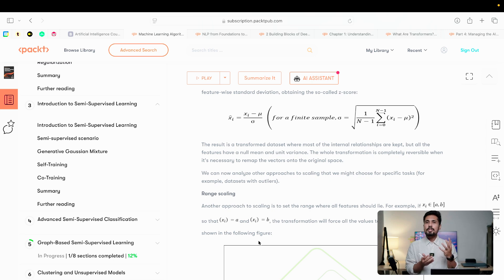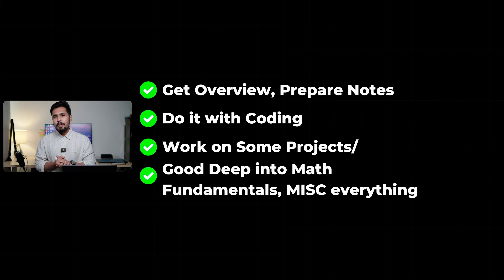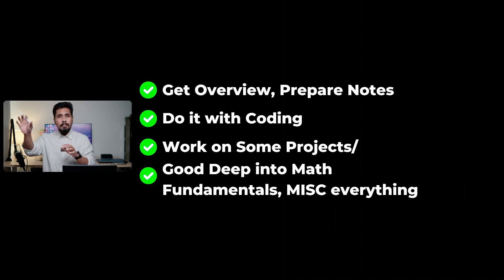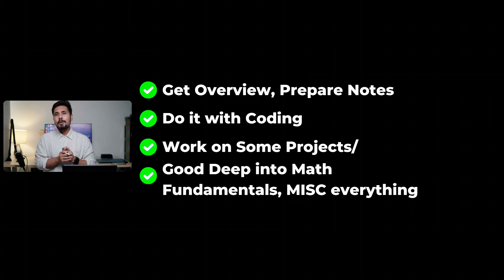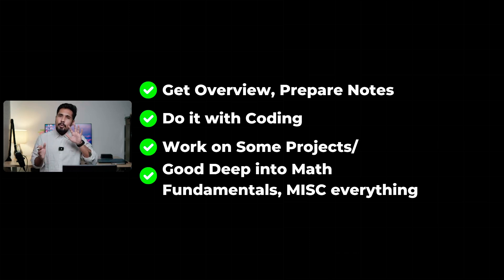Once you understand the purpose of linear algebra and calculus at a high level, you can start getting into statistics, then machine learning. Understand supervised learning, unsupervised learning, self-supervised learning, semi-supervised learning, and reinforcement learning. Start coding a simple supervised learning algorithm and understand the high-level math behind it — no need to go very deep. Get an overview, prepare notes on why math is important, write down every coding step, and document how an AI engineer performs their life cycle.